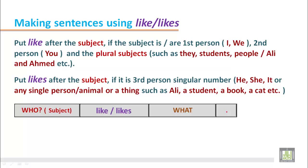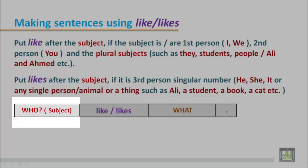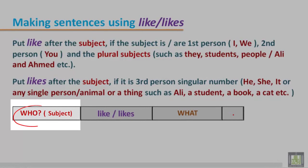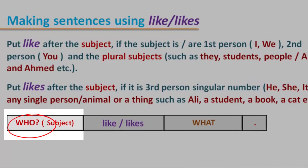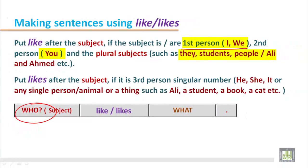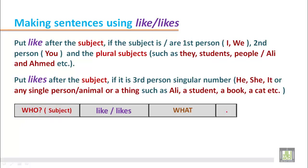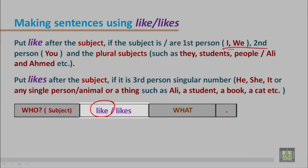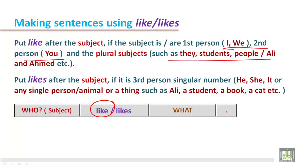Here is a structure that will explain how to make sentences using like or likes. The subject can be a name of a person, animal, or thing. It can be first person like I, we, second person you, or third person plural number like they, students, people, and Ali and Ahmed. If the subject is first person, second person, or third person plural number, we use like.